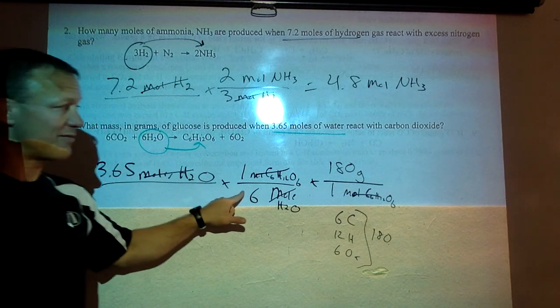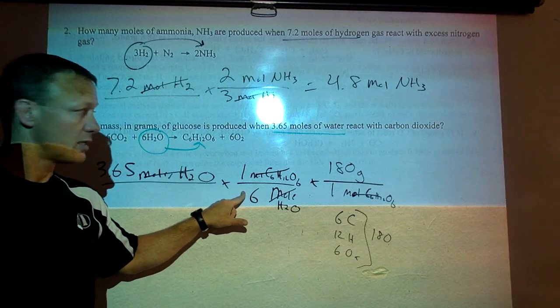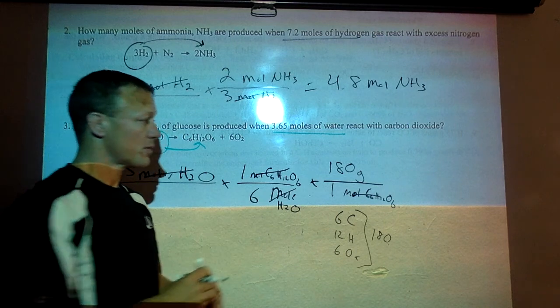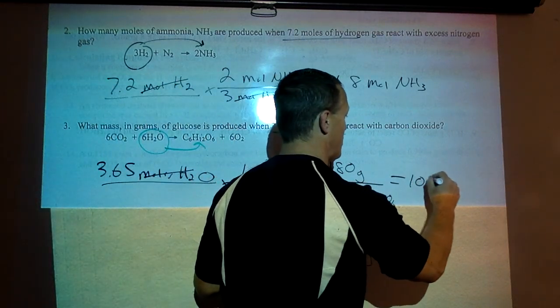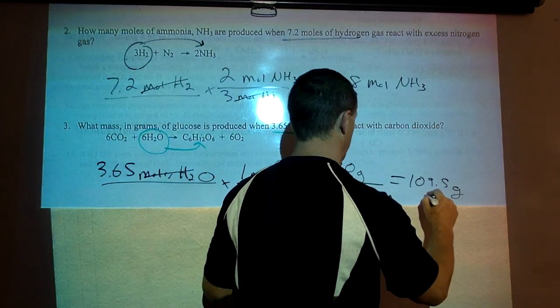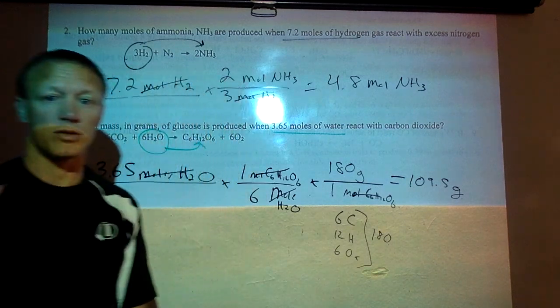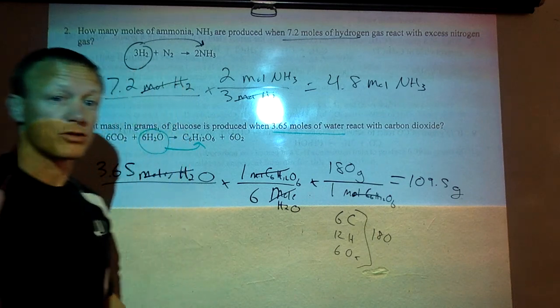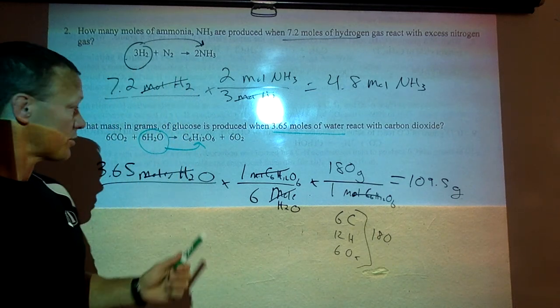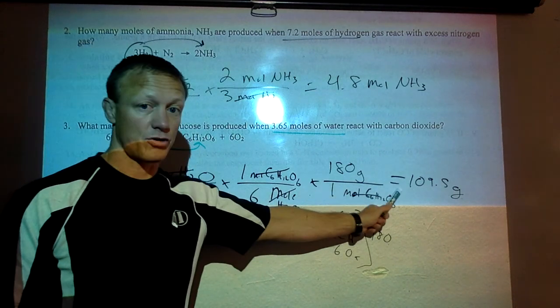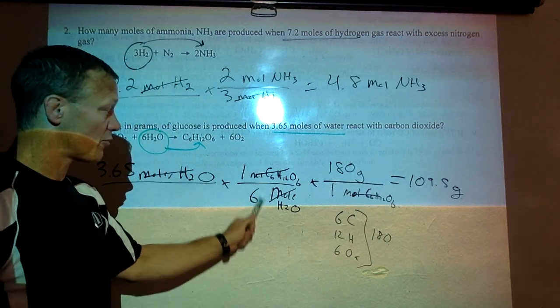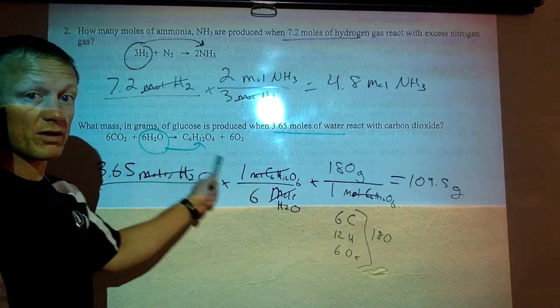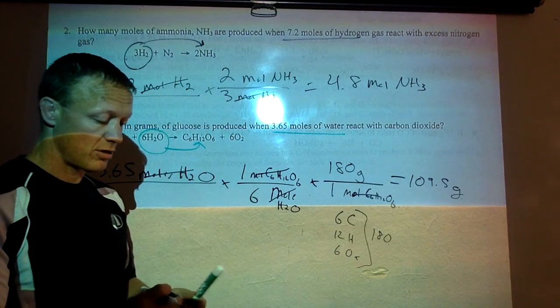Taking 3.65, dividing it by six, multiplying by 180. So it's that many grams of glucose that would be produced if you start with this much water. That's the max amount of glucose that can be made in this reaction from that much water. So that was a moles to grams problem. Notice we still do the ratio in there. We always do a ratio to get from one thing to the other. We never skip that step no matter what.